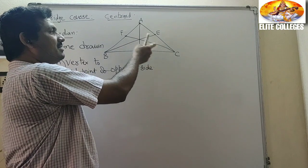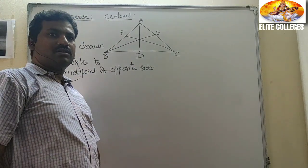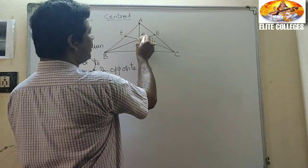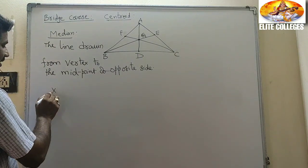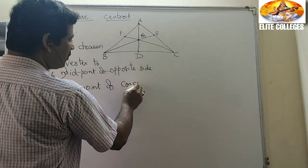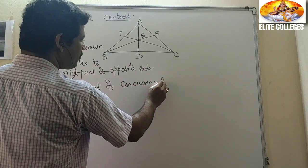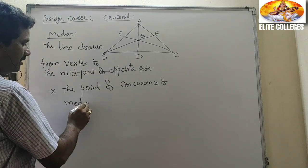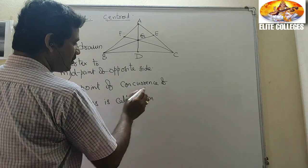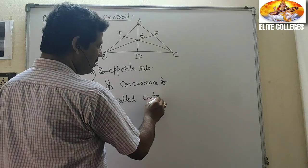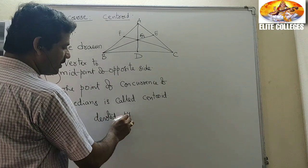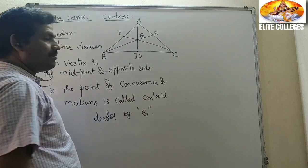AD is the median, BE is the median, and CF is the median. The point of concurrence of the medians is called the centroid, denoted by capital G.